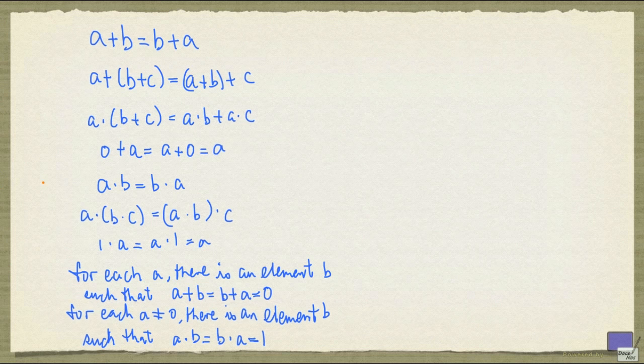Such a structure is called a field. Notice that the rational numbers satisfy all these properties, and so they form a field. But the integers do not form a field.